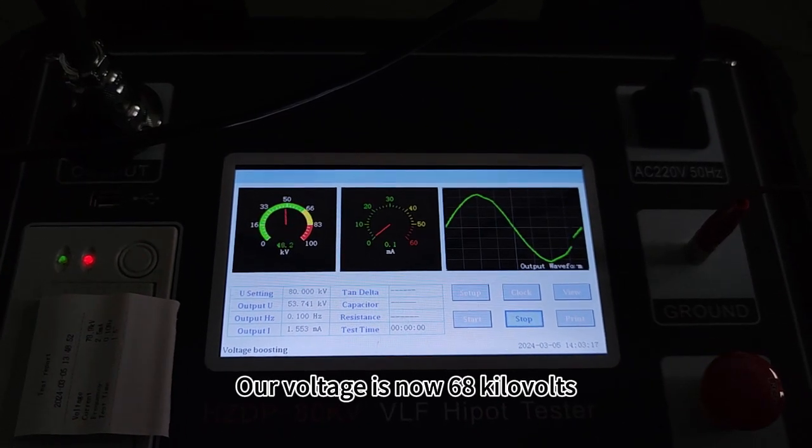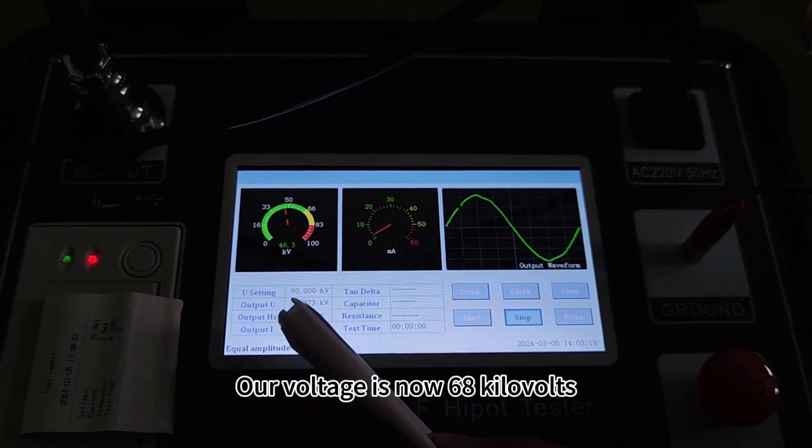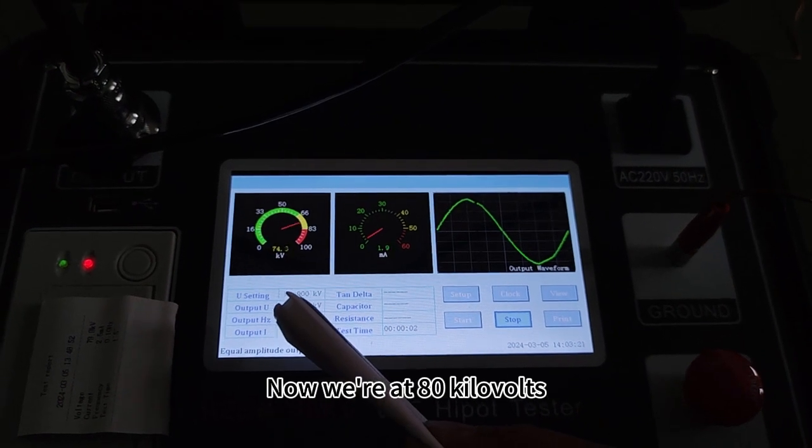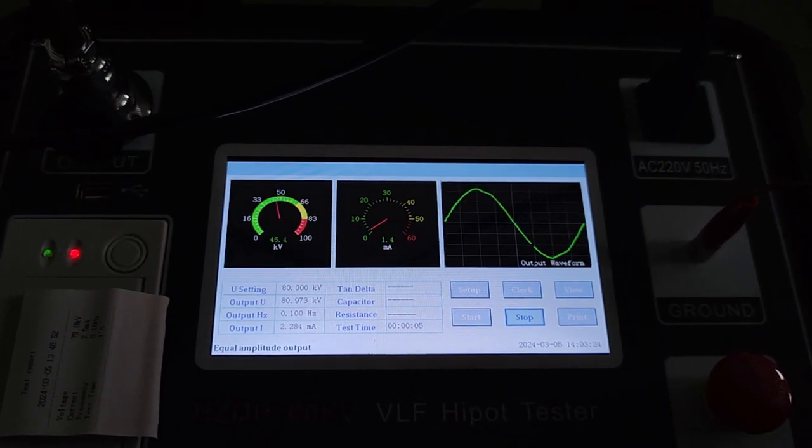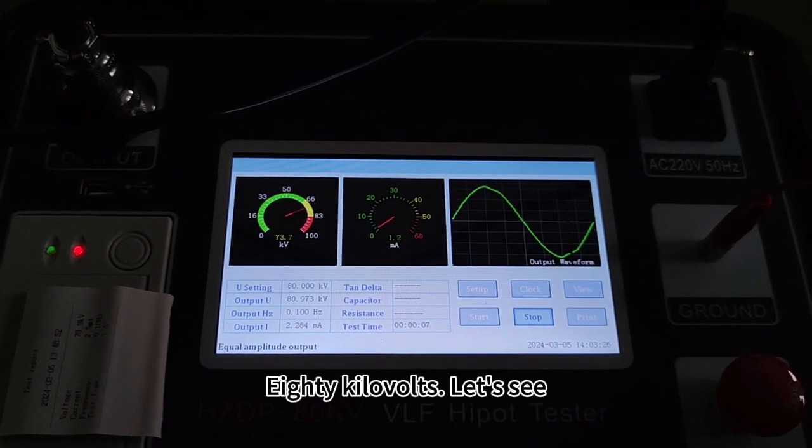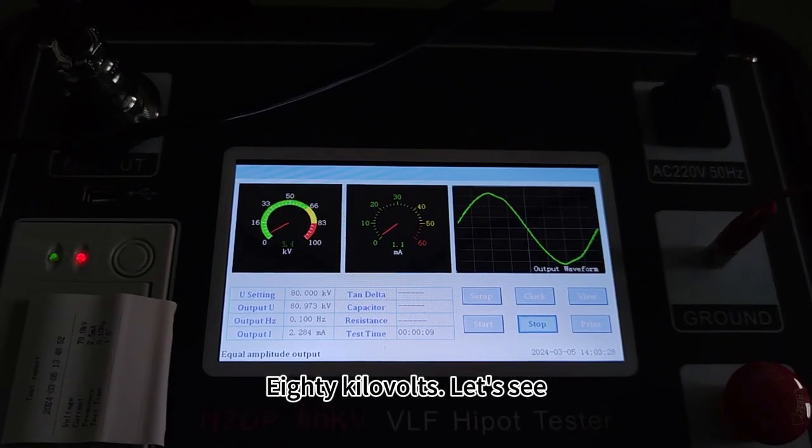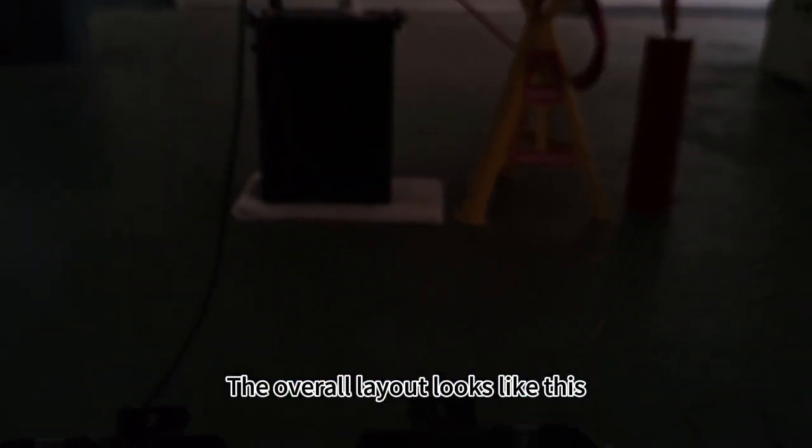Our voltage is now 68 kV. Now we're at 80 kV. Set 80 kV output. Let's see, the overall layout looks like this.